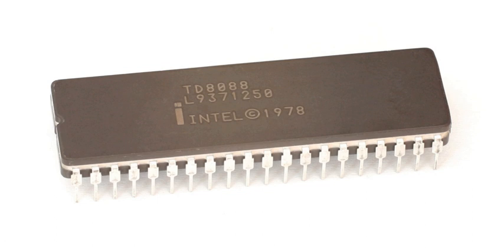The prefetch queue of the 8088 was shortened to 4 bytes, from the 8086's 6 bytes, and the prefetch algorithm was slightly modified to adapt to the narrower bus. These modifications of the basic 8086 design were one of the first jobs assigned to Intel's then-new design office and laboratory in Haifa.